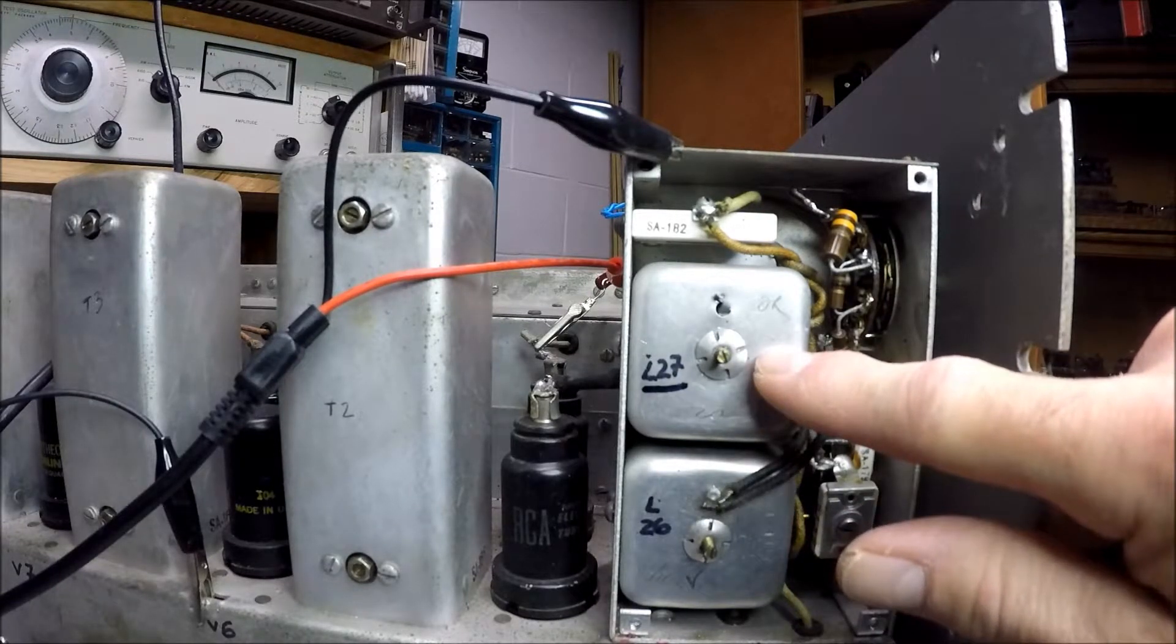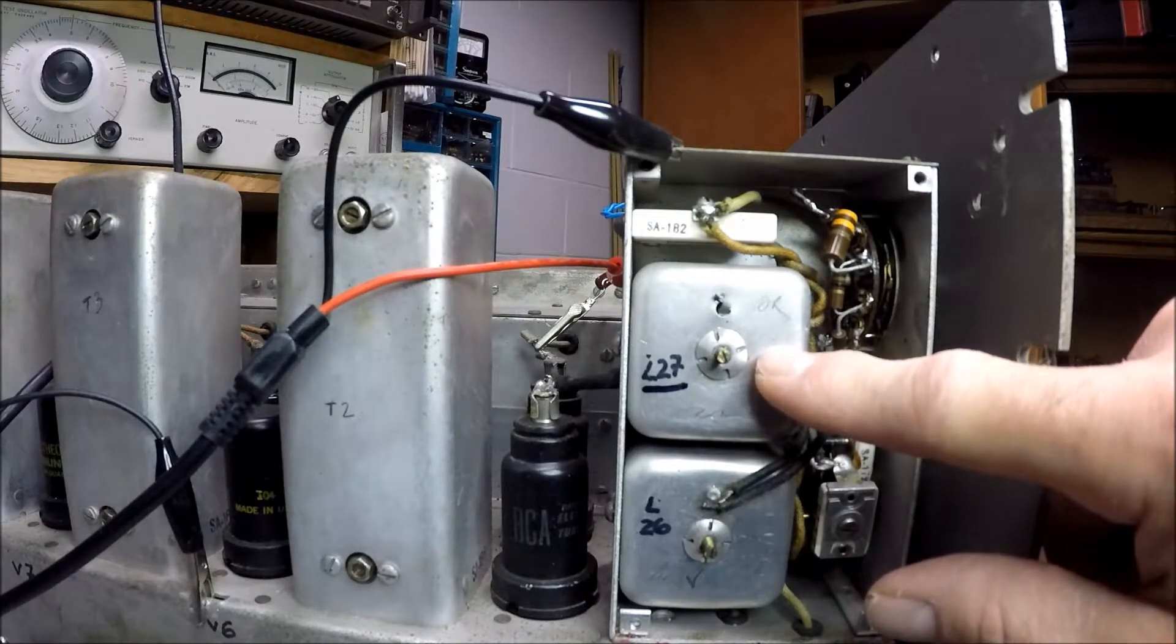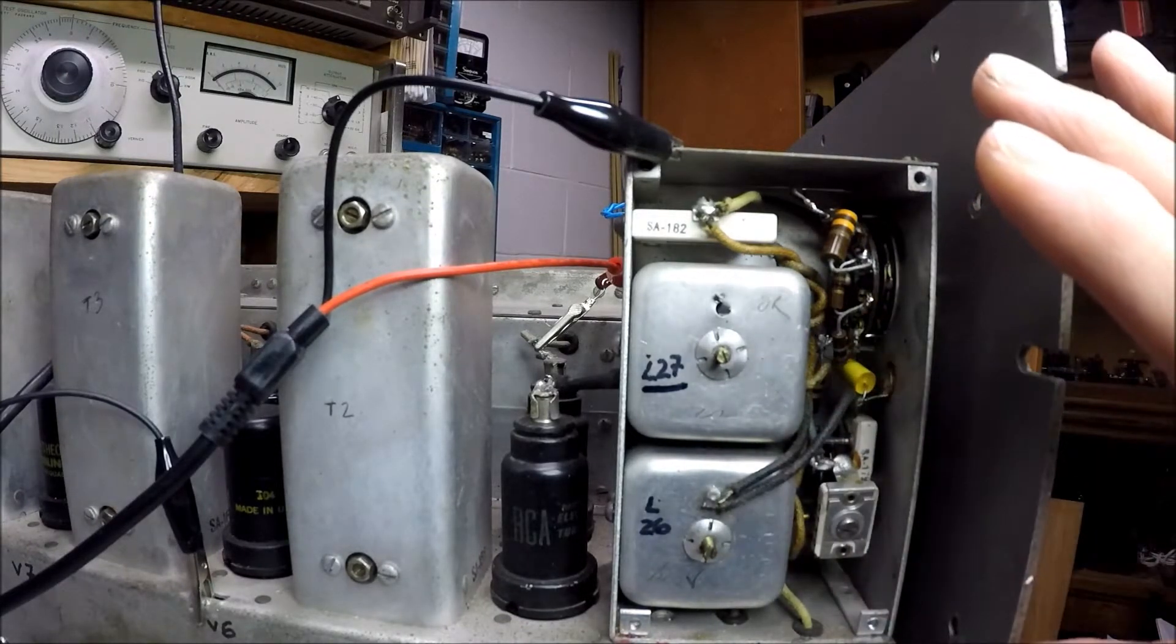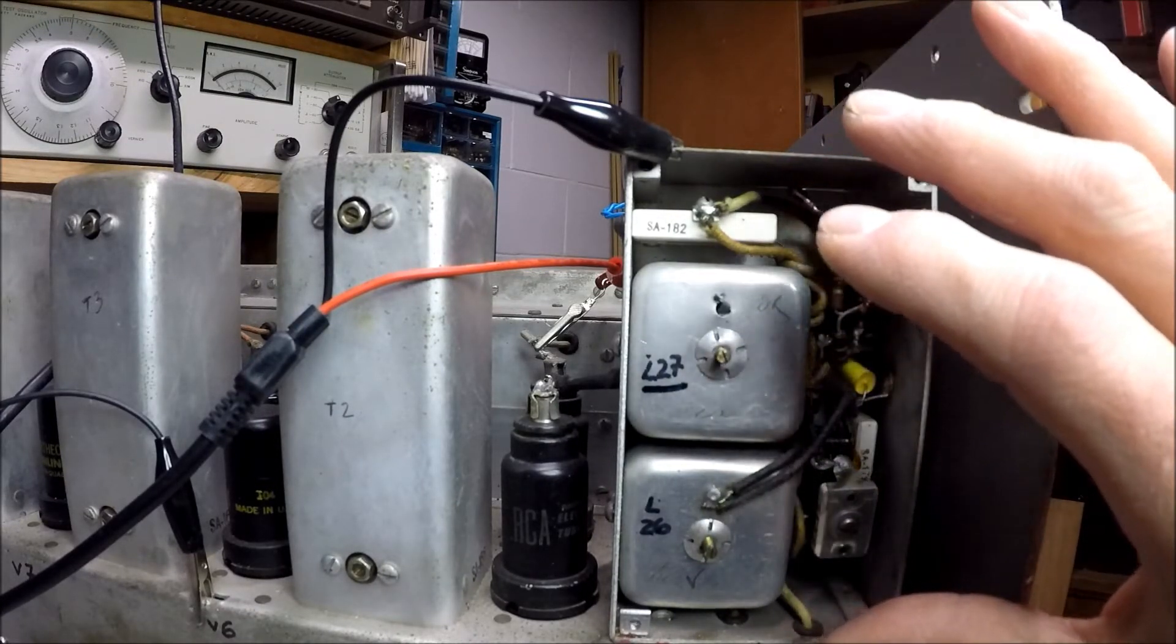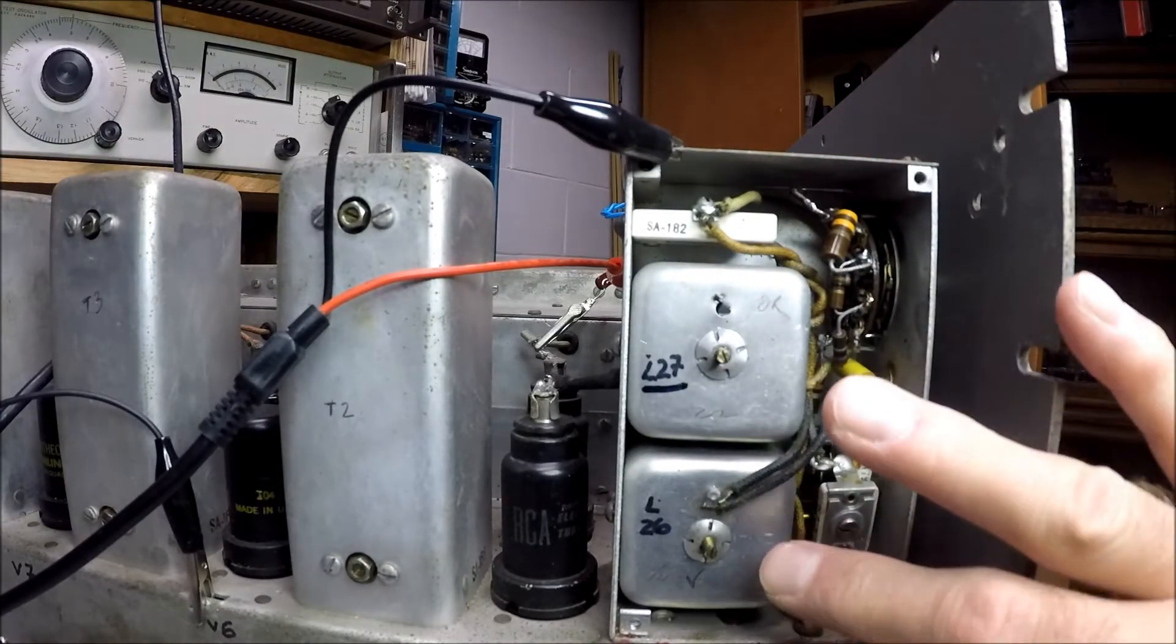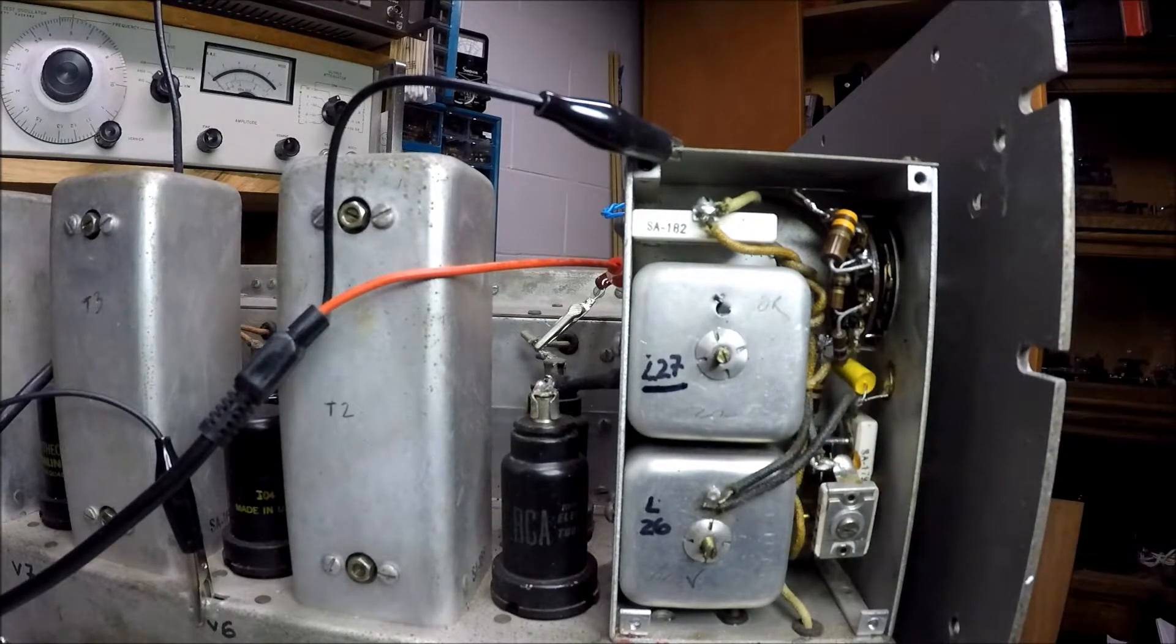Here's the dreaded L27 that you shouldn't touch unless you're watching the response of the system on a scope and this whole system is being swept with a function generator. And here's L26, which you can peak for an output.